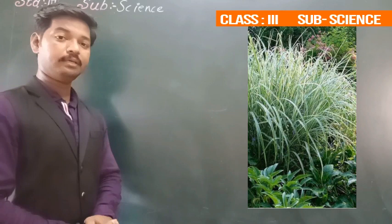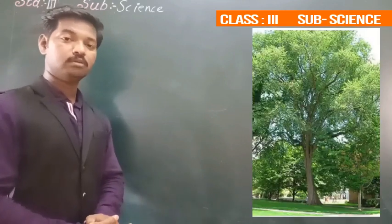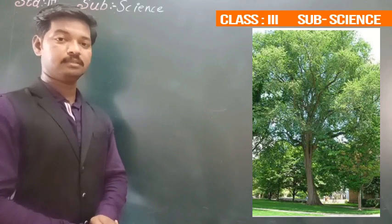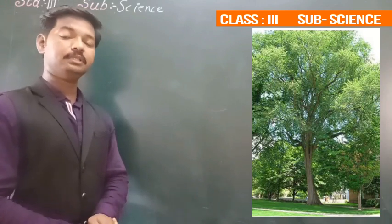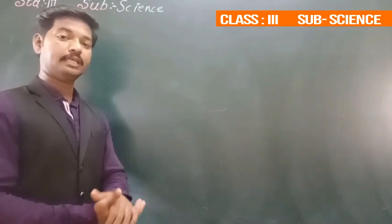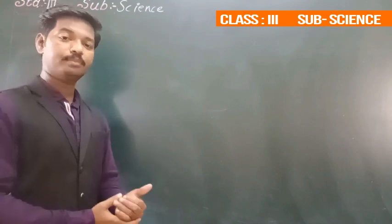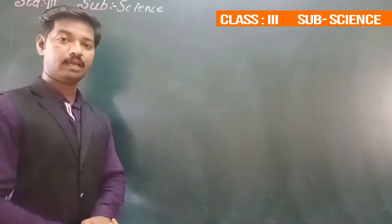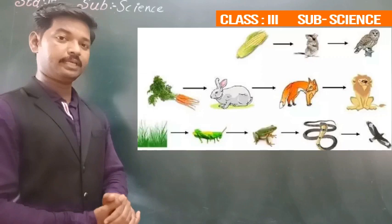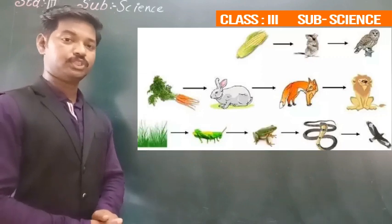A food chain always begins with a plant. Why? Because plants make their own food. So we can say that other animals are directly or indirectly depending on plants for their food. You will see some more examples of food chain.